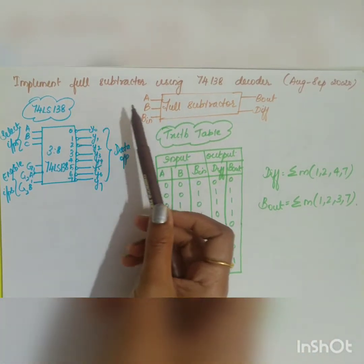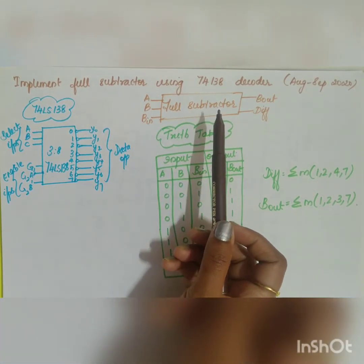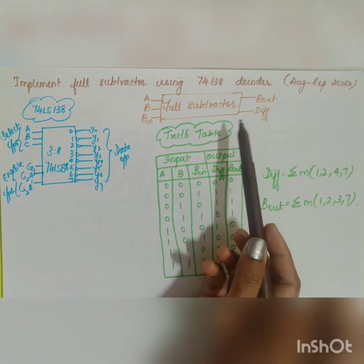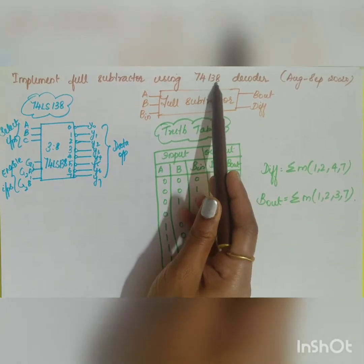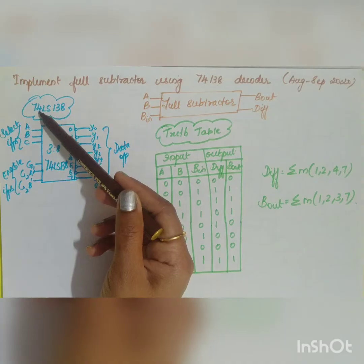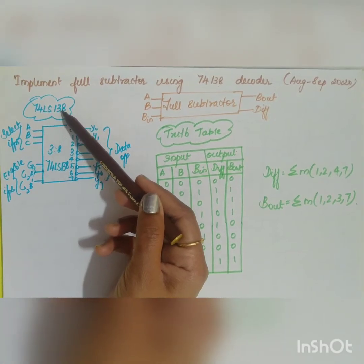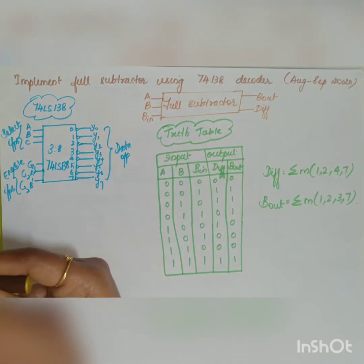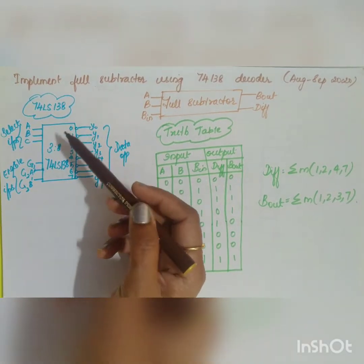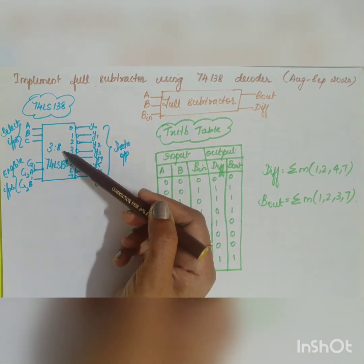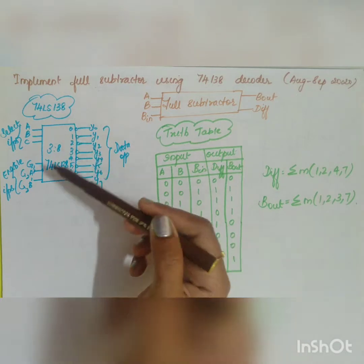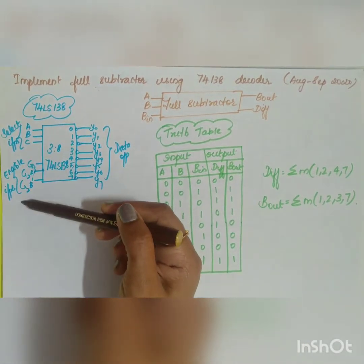The next question is to implement a full subtractor using the 74LS138 decoder, from the August-September 2020 exam. The 74LS138 is a 3-to-8 decoder which consists of 3 inputs and 8 outputs, along with 3 enable inputs.